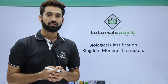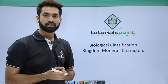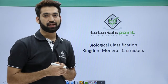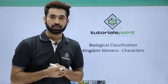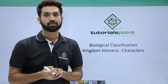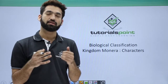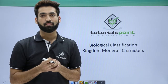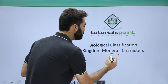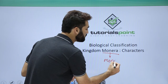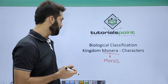In this session we'll be detailing you about Kingdom Monera. Monera is one among the kingdoms in five kingdom classification and all Monera members are prokaryotes. 'Pro' means primitive, 'karyon' means nucleus. The nucleus is not well defined or developed, and all nuclear structures like nuclear membrane are absent in Kingdom Monera members. The word Monera comes from 'Monos', meaning single, because all Monera members are unicellular.